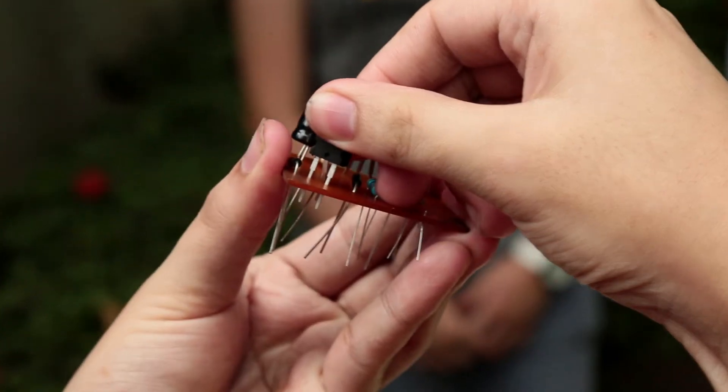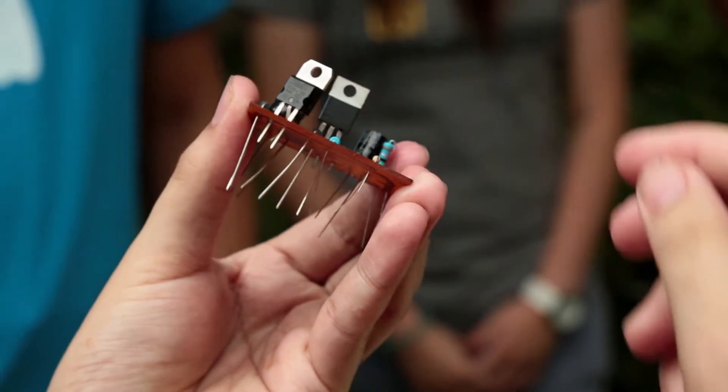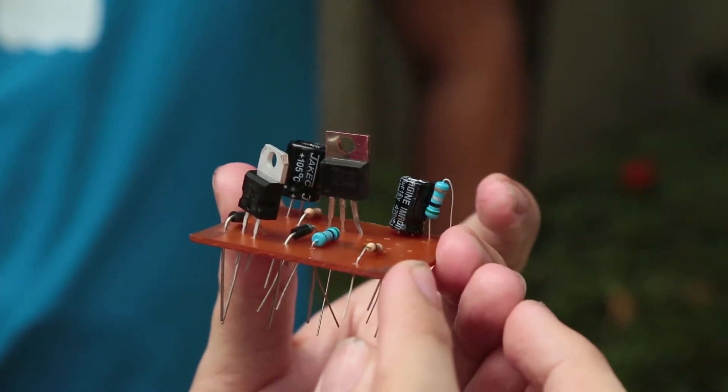This is a 7805 regulator. It's used so we can use this circuit as a charger for your phones. This is optional though. You don't really have to put it in because with the 78015 regulator, it's actually a working circuit already.